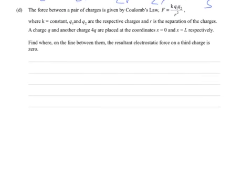Last one. A force between a pair of charges given by Coulomb's law. I don't know if you've covered that this year or previous years, but there it is, where K is a constant, Q1 and Q2 are the charges, R is the separation of the charges. Looks like the universal gravitation formula, and that's not a coincidence. Field theory had a lot of influence on how they form these equations. A charge Q and another charge 4Q placed at the coordinates X equals 0 and X equals L. Let's draw this. So we've got Q and we've got 4Q, and the distance of separation of those is L. Find where on the line between them the resultant electrostatic force on a third charge is 0.